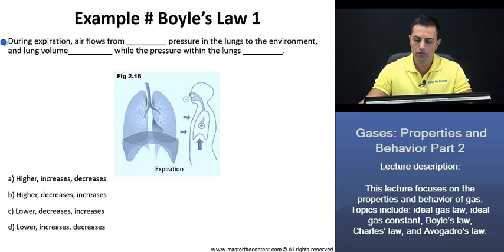During expiration, air flows from blank pressure in the lungs to the environment, and lung volume blank while the pressure within the lungs blank. This problem is going to be a little bit tricky due to the fact that we have multiple blanks. Thus, we'll solve it in portions working with the first part here. Now, we see the answer for that can either be higher or lower. Thus, during expiration, air flows from higher or lower pressure in the lungs to the environment. It's going to be higher pressure.